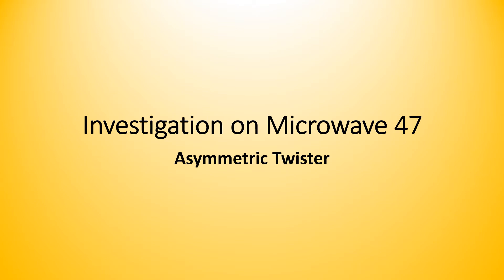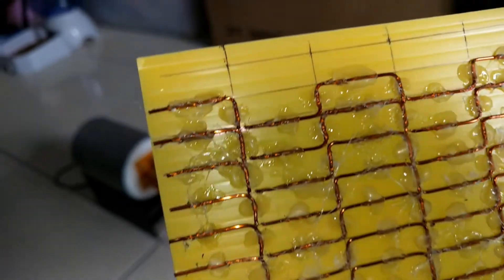In this video we will explore the behavior of asymmetric twister. This modified twister splits the signal asymmetrically. The twister is made asymmetric by cutting the wire where it bends at each bottom left corner.